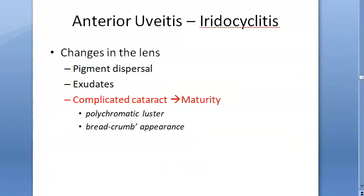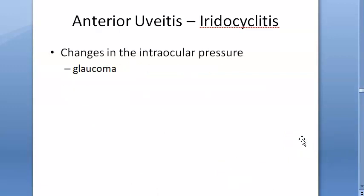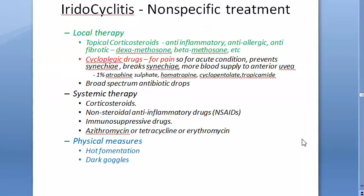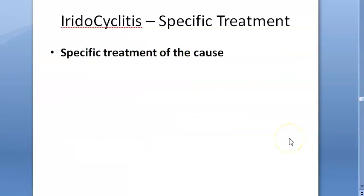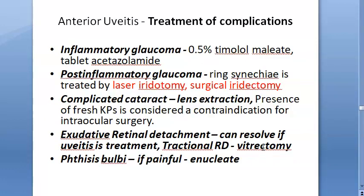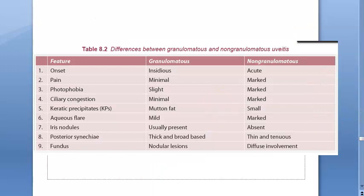Lens can develop complicated cataract. Complications of untreated iridocyclitis include cystoid macular edema, raised intraocular pressure, and glaucoma. Management: local and systemic therapy — treat the cause. Granulomatous uveitis is also anterior iridocyclitis but with minimal pain (chronic), slight photophobia, mild ciliary injection, and mutton fat KPs — everything is milder.